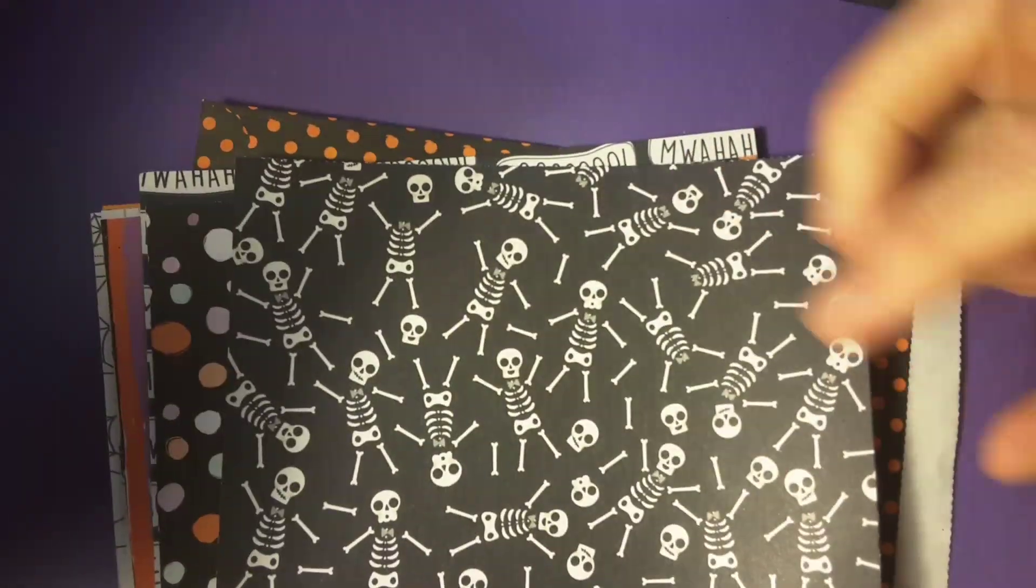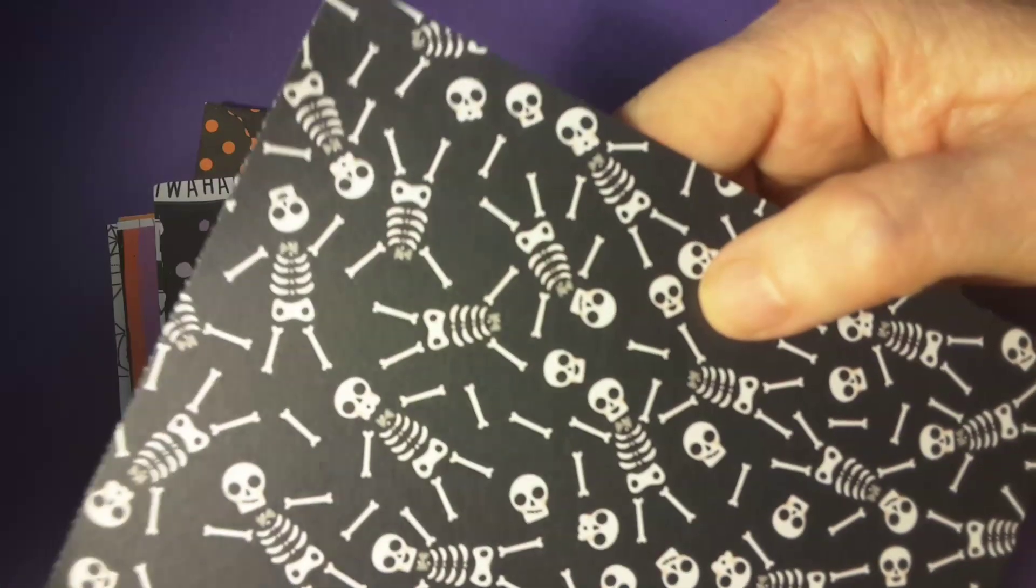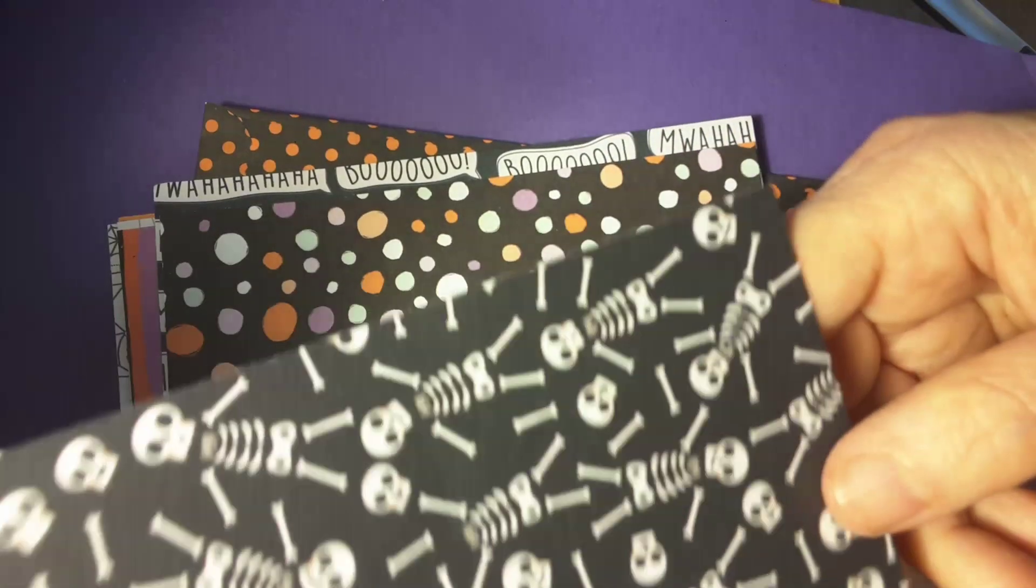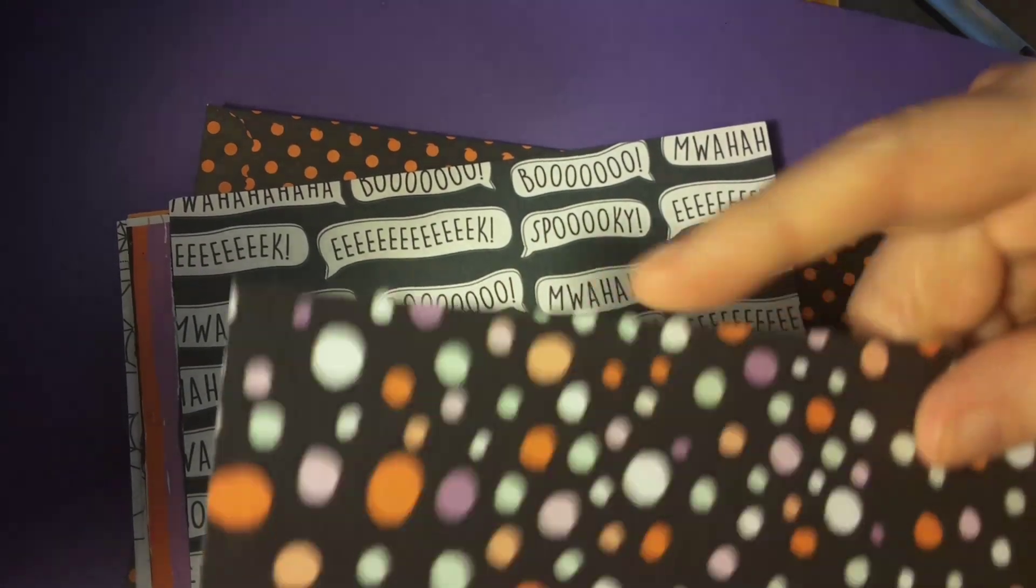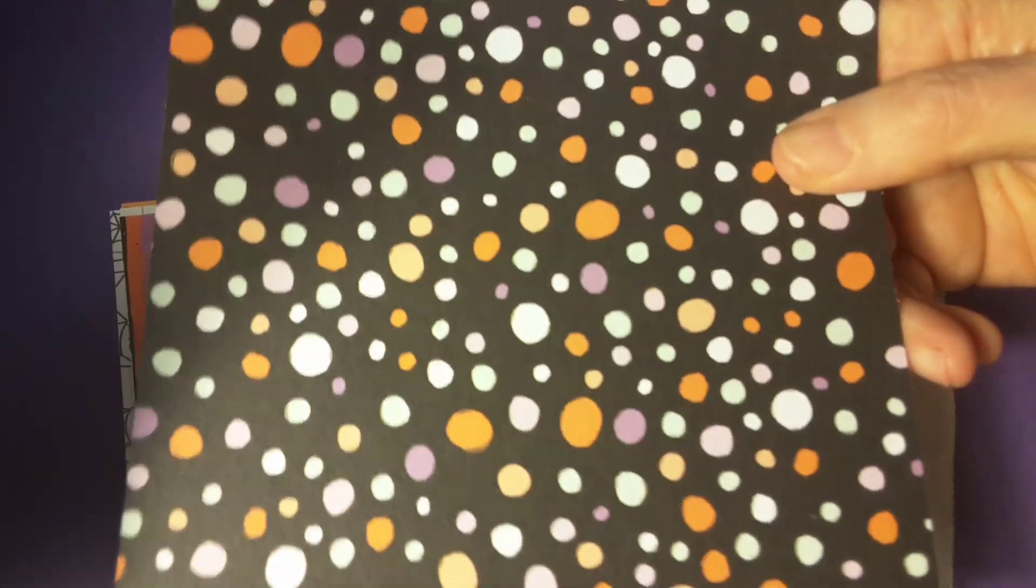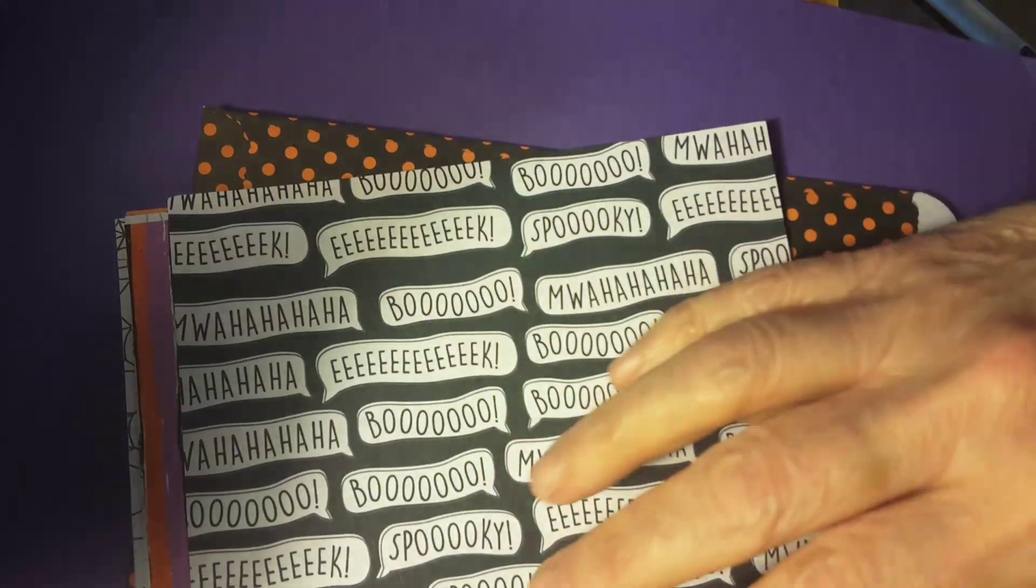Just bumped into that camera. That's why it's moving. And here's some paper with skeletons all over it. Like that. And here's a piece that's got circles all over it, little dots or whatever you want to call it.